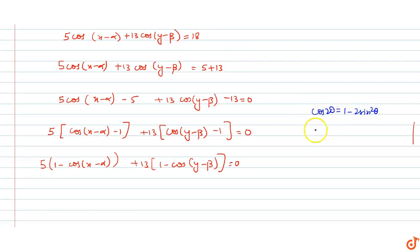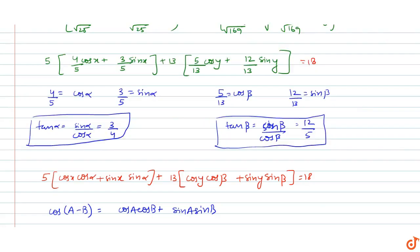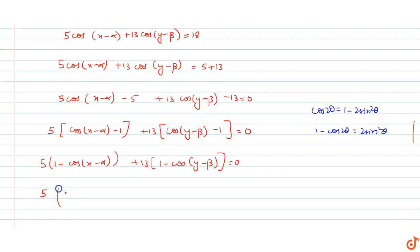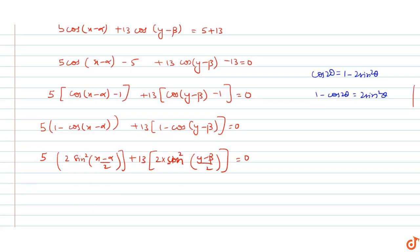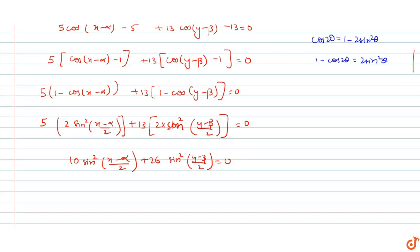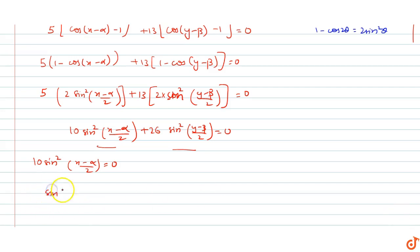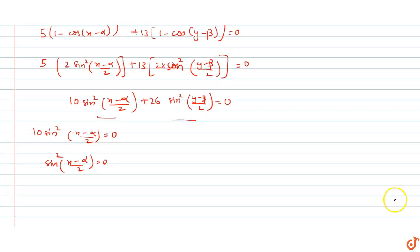हमें formula पता है: cos2θ = 1 − 2sin²θ, यानी 1 − cos2θ = 2sin²θ. इस formula को use करें तो: 5·2sin²((x−α)/2) + 13·2sin²((y−β)/2) = 0. यानी 10sin²((x−α)/2) + 26sin²((y−β)/2) = 0. ये दोनों positive numbers हैं क्योंकि square of any number is positive, और दो positive numbers का sum 0 तभी हो सकता है जब वे individually zero हों।